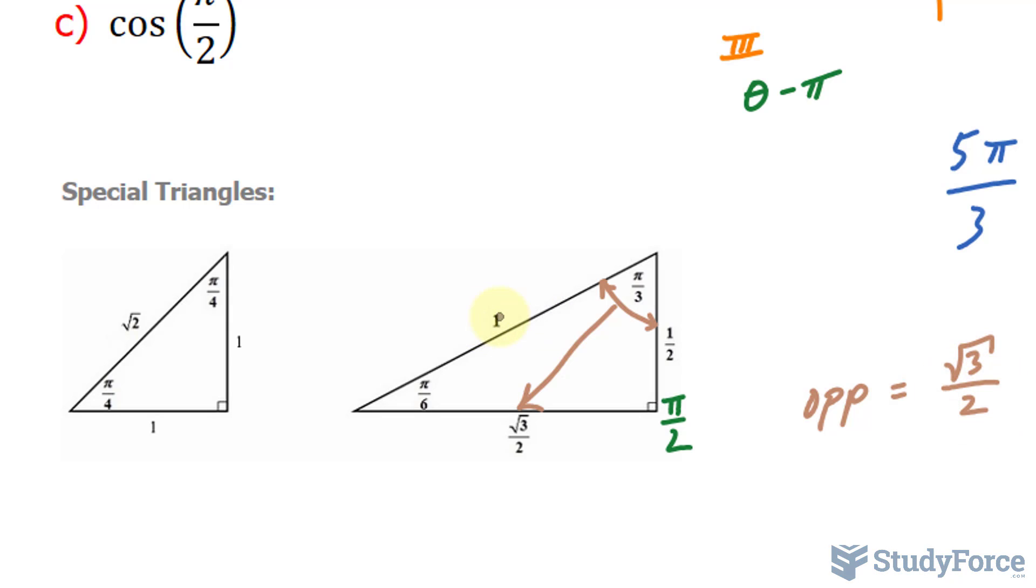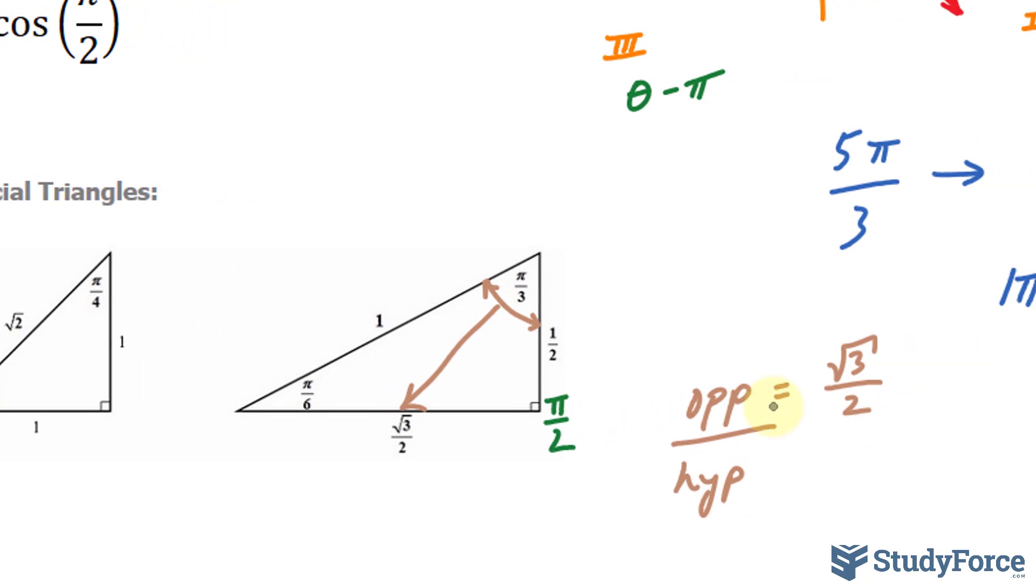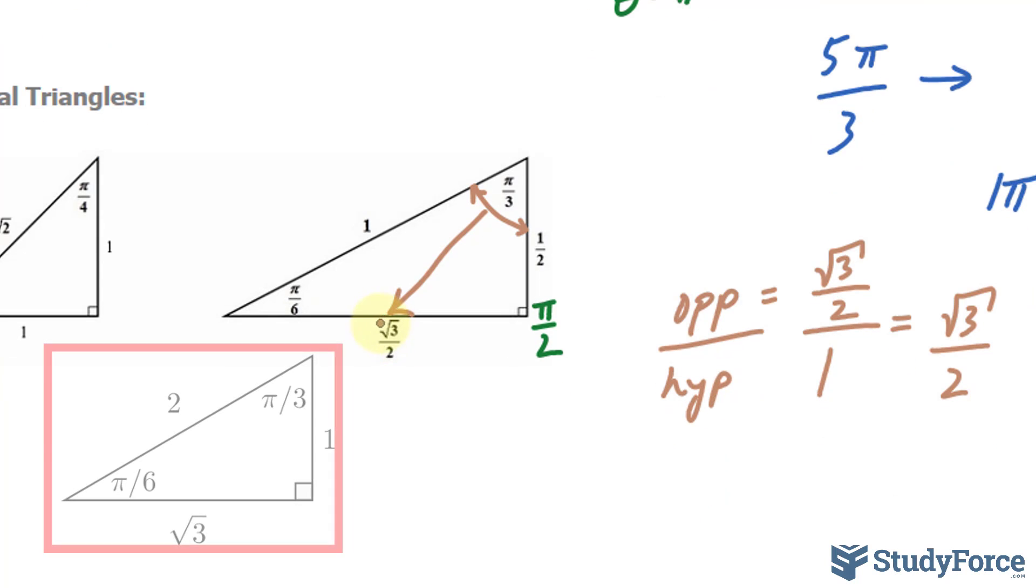And the hypotenuse being 1. So opposite over hypotenuse, we divide this by 1, and anything divided by 1 is the number itself. It's important to keep in mind that some special triangles are written differently. For instance, some special triangles might have the opposite of π over 3 being the square root of 3 only, not the square root of 3 over 2, and the hypotenuse may be 2 instead of 1. So just follow the special triangle that you've memorized.